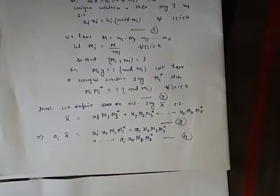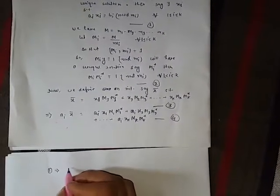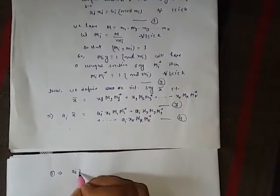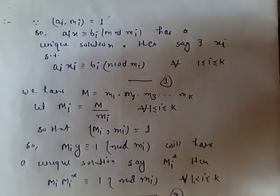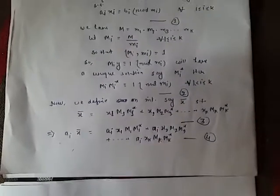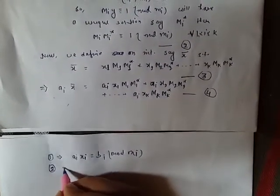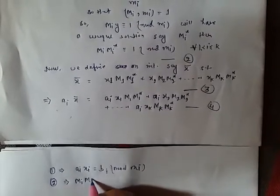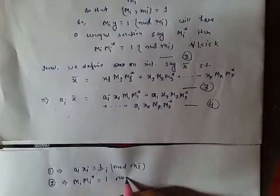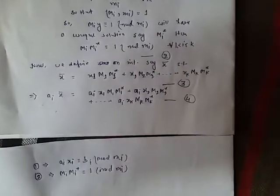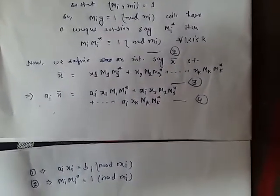Now we write equation number 1: ai·xi ≡ bi (mod mi). This comes from equation 1. And also we write equation number 2, which is: Mi·Mi* ≡ 1 (mod mi).